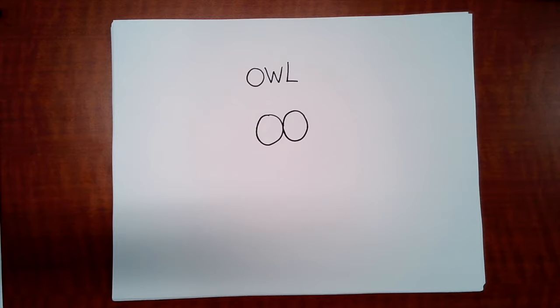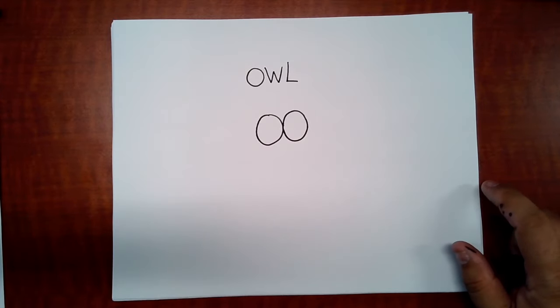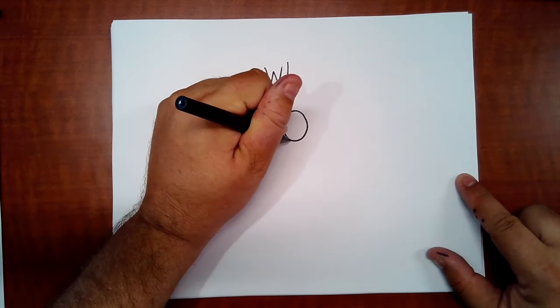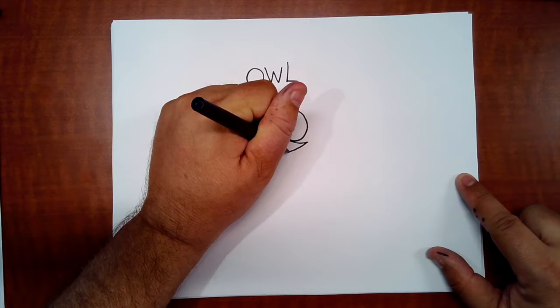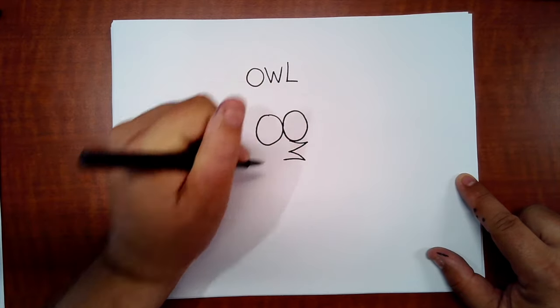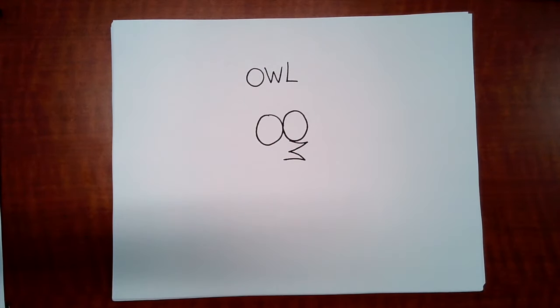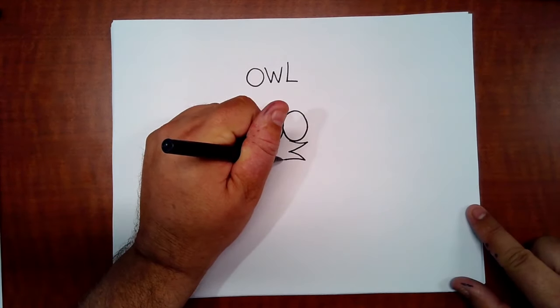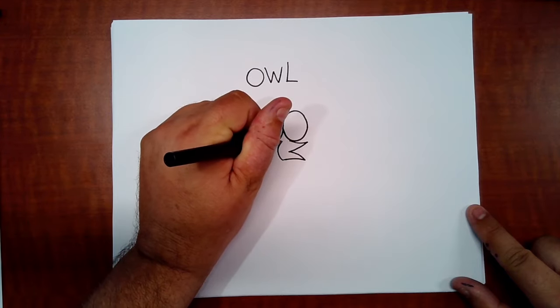Next is the beak, so we're going to take the letter W and turn it on its side, and then connect from here to here.